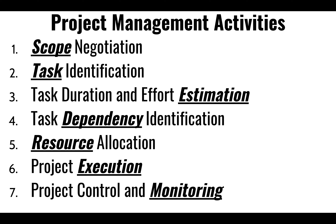Some activities at the beginning include a lot of scope negotiation — deciding what the schedule is going to be, delivering certain things in particular phases or quarters, focusing on the minimum viable product first, and then nice-to-have features in later quarters. We also identify all the tasks that need to be executed and how long they'll take. The longer we're asked to estimate into the future, the less accurate it's going to be — the bigger the cone of uncertainty.